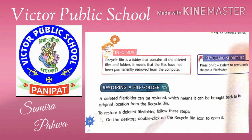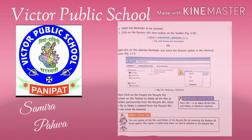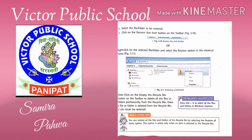If we want to restore a file from the Recycle Bin, first we have to double click on Recycle Bin. Then we select the file in Recycle Bin, and click on the Restore this item button. Our file will be restored to its original location.